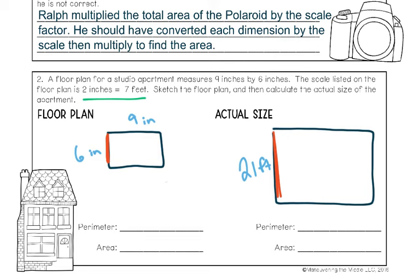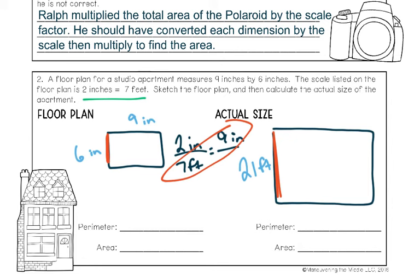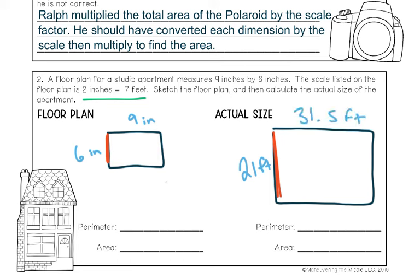Now we need to find the length of the actual apartment in feet. Here's a mistake I see people do: they'll take 9 times 2/7, saying the ratio is 2/7, let's multiply by 9. That's wrong — you can't just multiply that because it's a proportional relationship. You have a scale factor of 2 inches for every 7 feet, not 2/7 times 9. Set it up as a proportion and cross multiply: 7 times 9 divided by 2. You get 31.5 feet, corresponding to the 9-inch length.